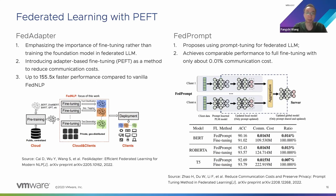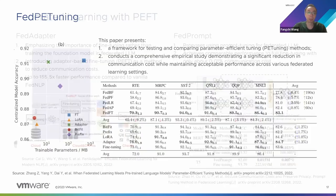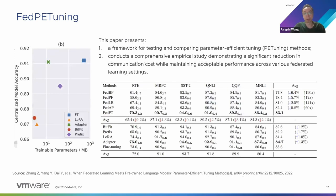Naturally, in federated learning, we can apply these PEFT approaches: each party will apply PEFT for local training, and afterwards we only need to transmit and aggregate the updated part. The proportion of transmitted parameters is generally about 1% or even less of the original model's parameter count. The industry has also proposed FedAdapter and FedPrompt, which combine PEFT with federated learning. Essentially, we can achieve a balance between cost and acceptable performance.